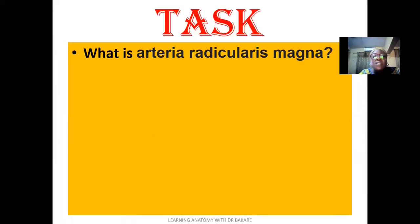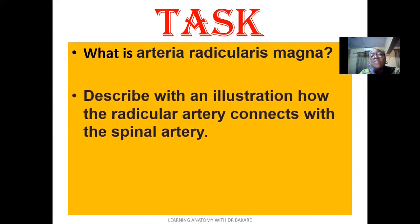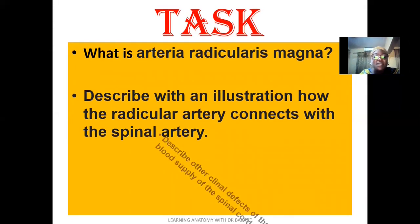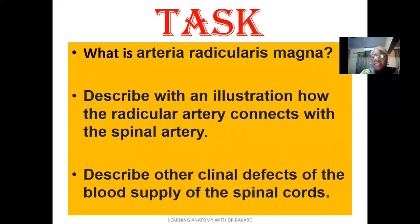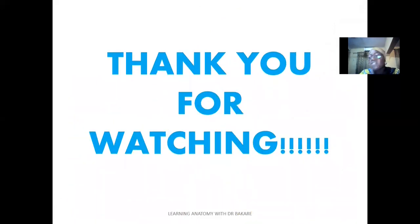Here is a test for us. The first question asks: what is the arteria radicularis magna? Describe this vessel and its relevance. The second asks you to describe with an illustration how the radicular artery connects with the spinal artery — use a diagram to illustrate this. The last one asks you to describe other clinical defects of the blood supply of the spinal cord. Thank you for watching. Let's continue to increase our knowledge in anatomy through this channel.